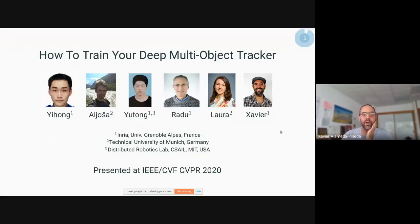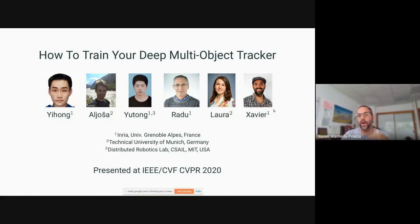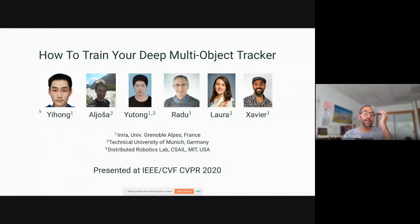The way I'm going to structure this talk is to present one contribution at a time — each is a paper that was published, for instance at CVPR last year. If you have a very urgent question, you can interrupt while we are discussing a certain topic, or if you prefer to keep it until the end, that's also okay. The first contribution is about training a deep multi-object tracker, and this is mainly the work of Yihong and Naliyosha, with contributions from Yutong, Radu, Laura, and myself.